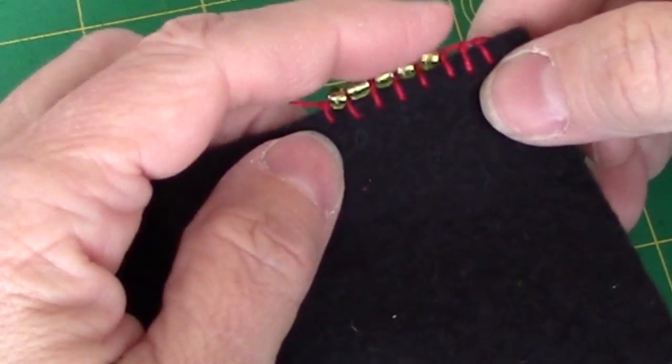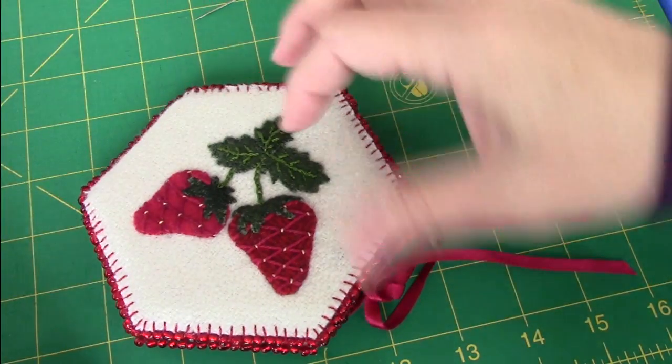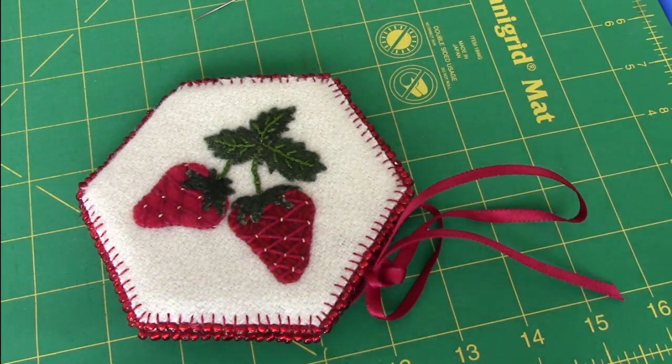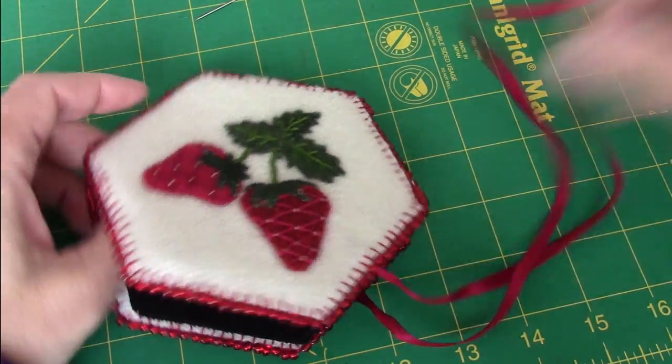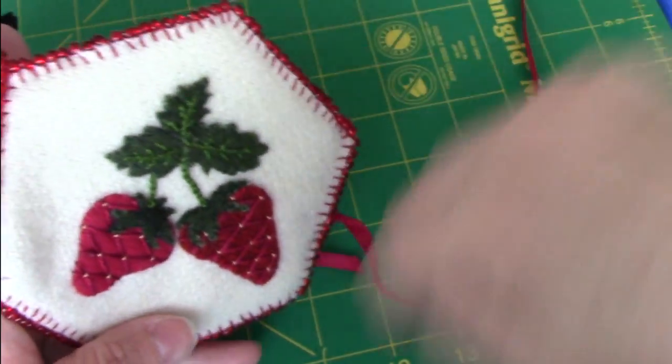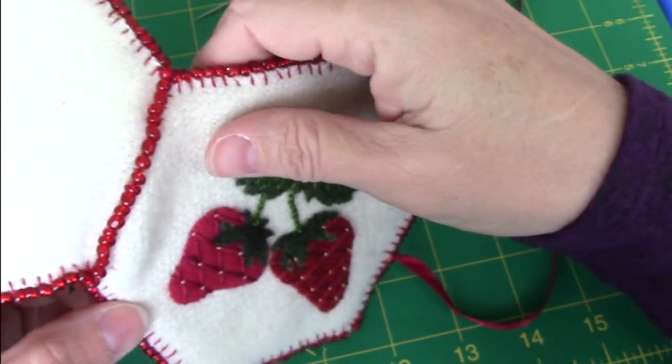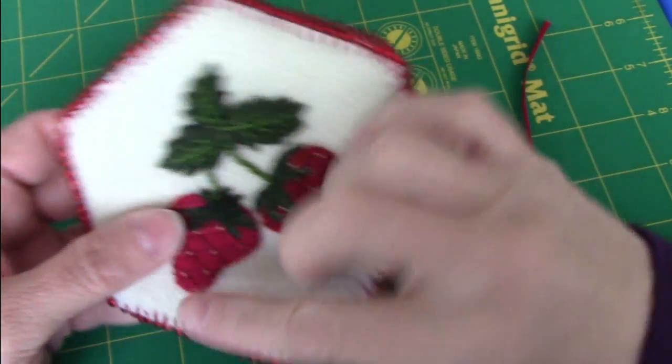So that's how you add the beads with the knotted blanket stitch. This is my finished needle book. To stitch it, I started in the V, and went around one section, then I went around the other. And then at the end, I came back and added the beads on the spine.